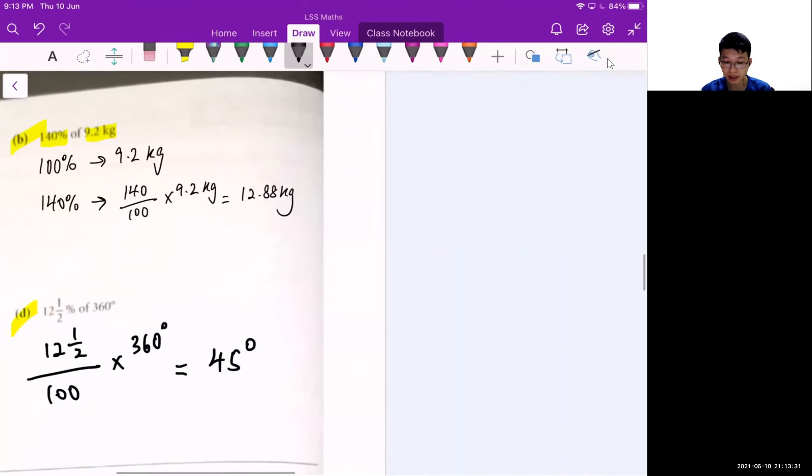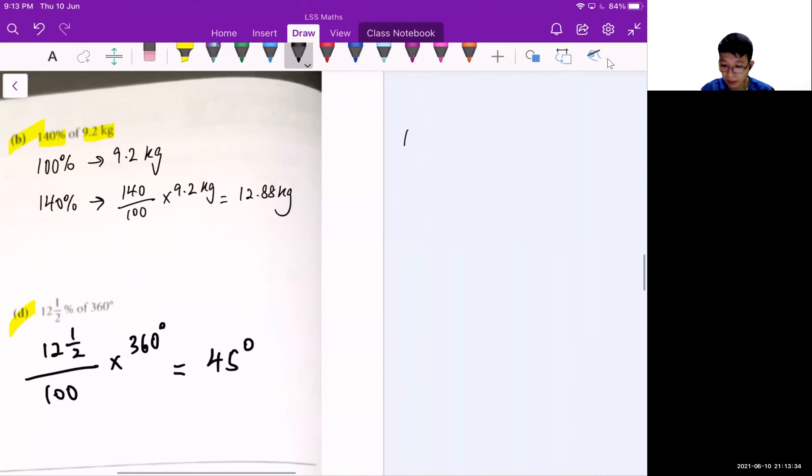Some of you might be wondering how come I can just do it directly in this manner. So let me show you some workings. If we do a longer method, here I will write down 100% is 9.2 kg and after that I will find what is 1% which is 9.2 over 100. After that, to find what is 140%, I will take 9.2 over 100 multiply with 140 and this will give me 12.88 kg.